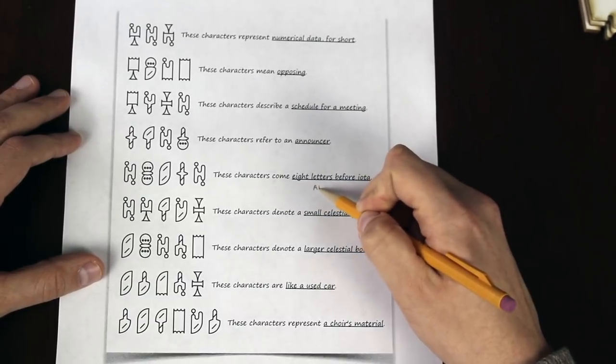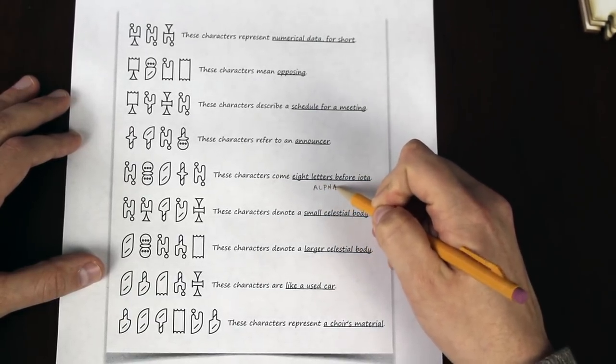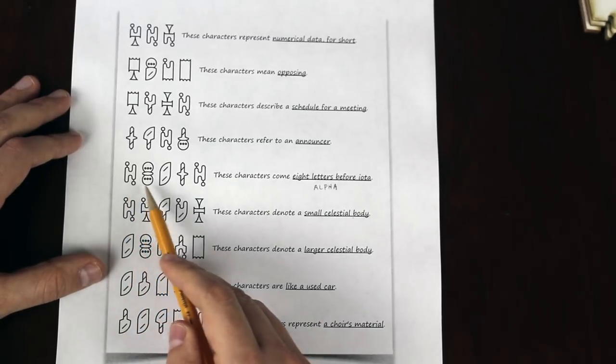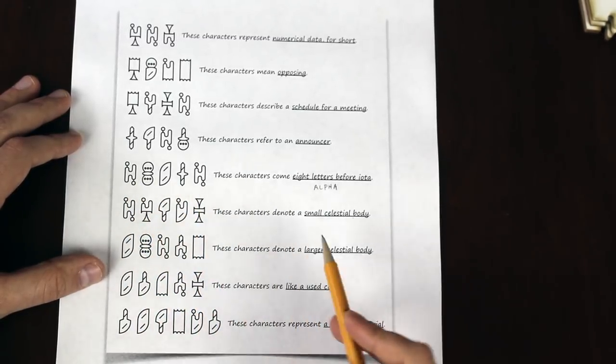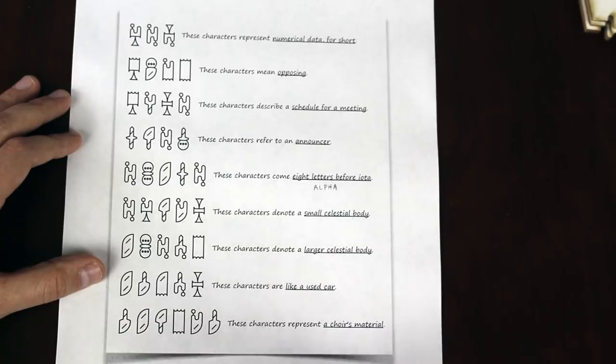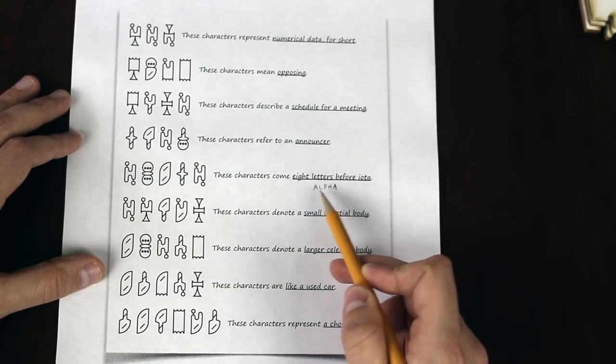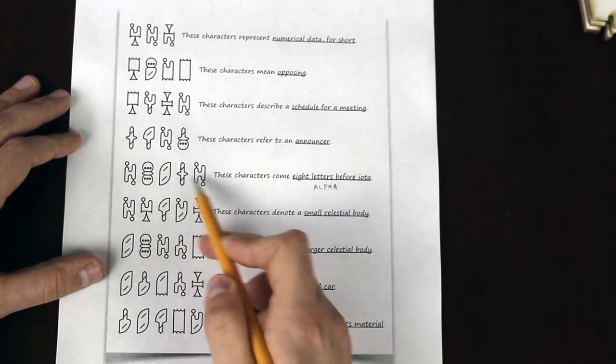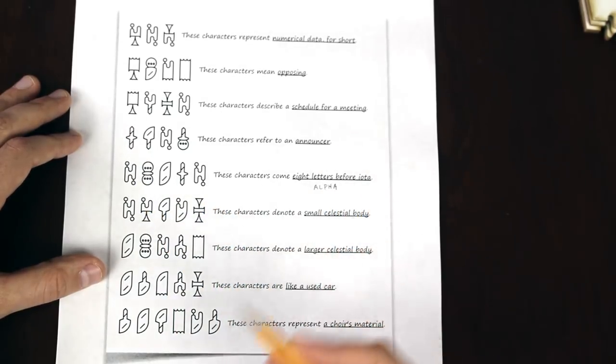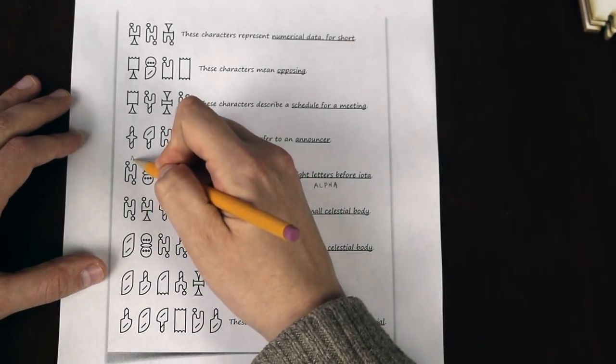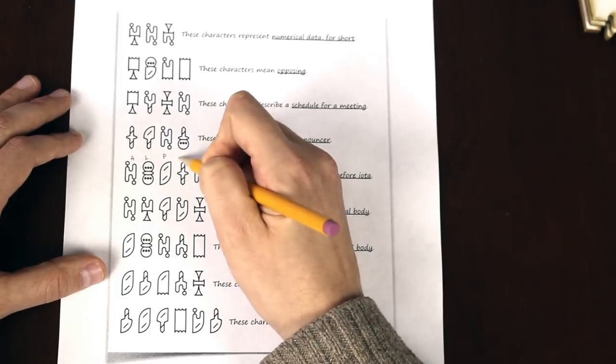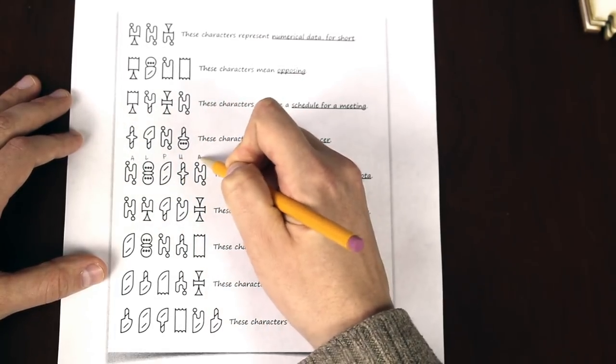eight letters before iota is alpha. And if you look over here, we have five symbols that correspond to what's hopefully that answer. The first and last letters of alpha are the same, and so are the symbols here. There are five symbols and five letters. So it's not that big of a leap to say this might correspond to A, L, P, H, and then the last symbol is also an A.